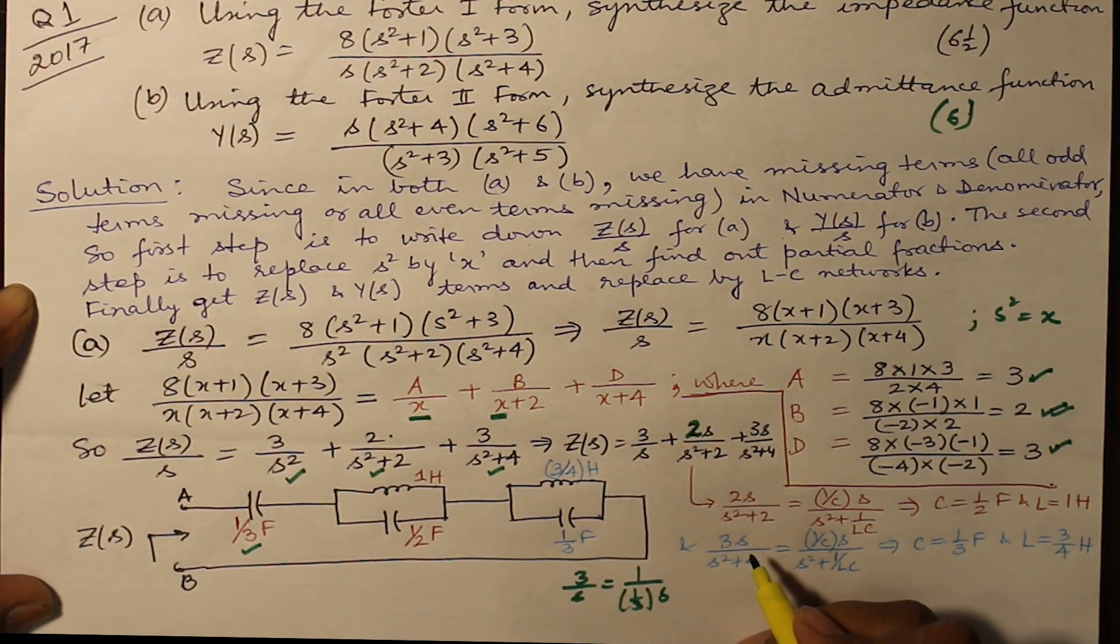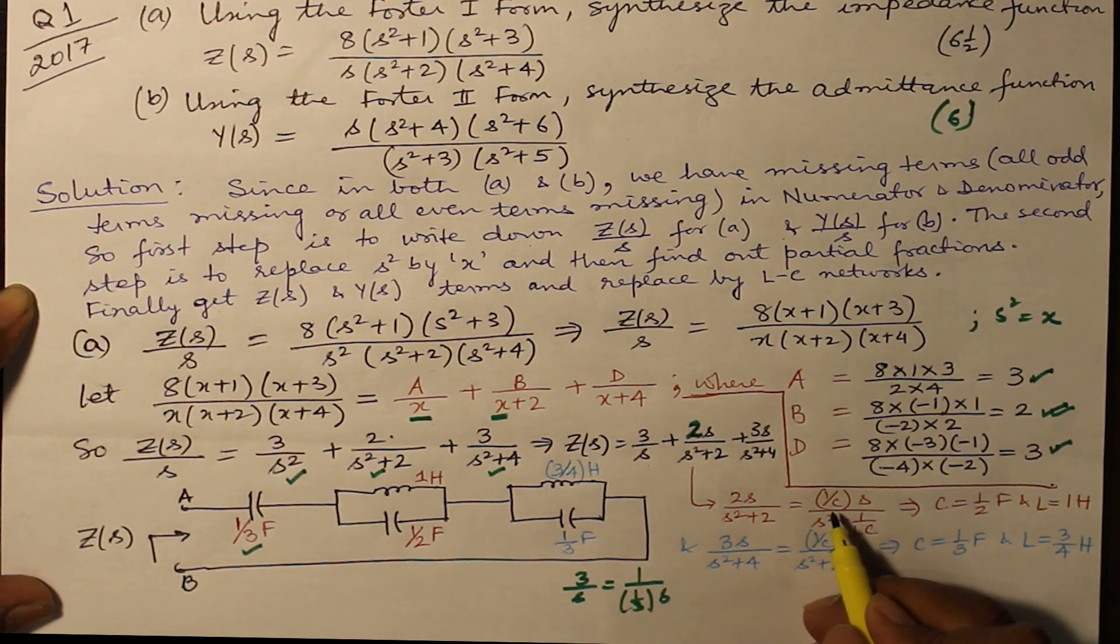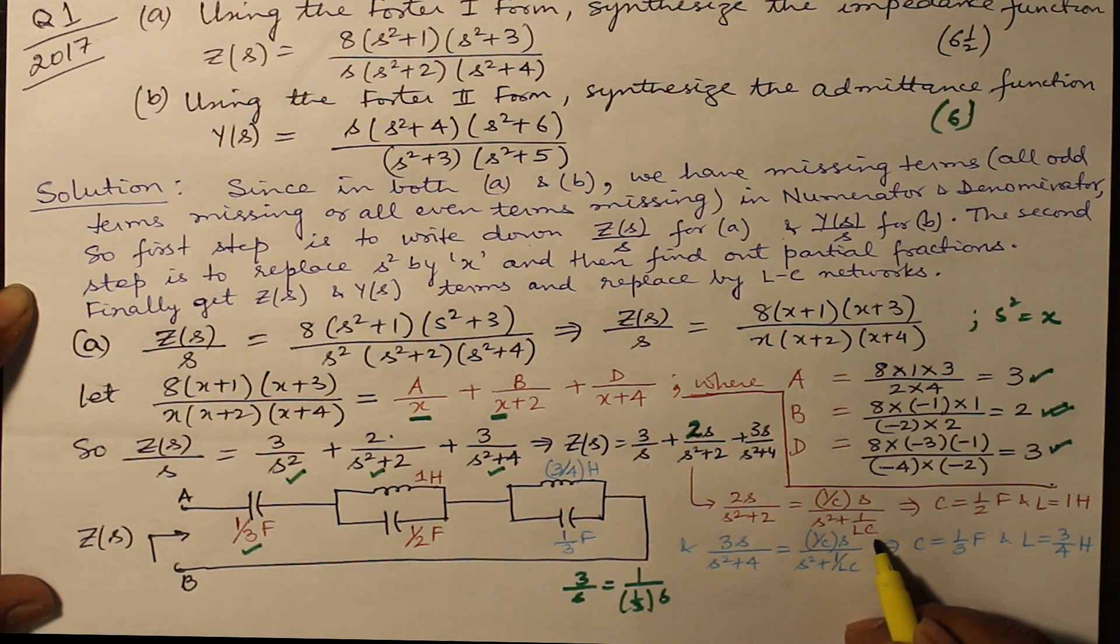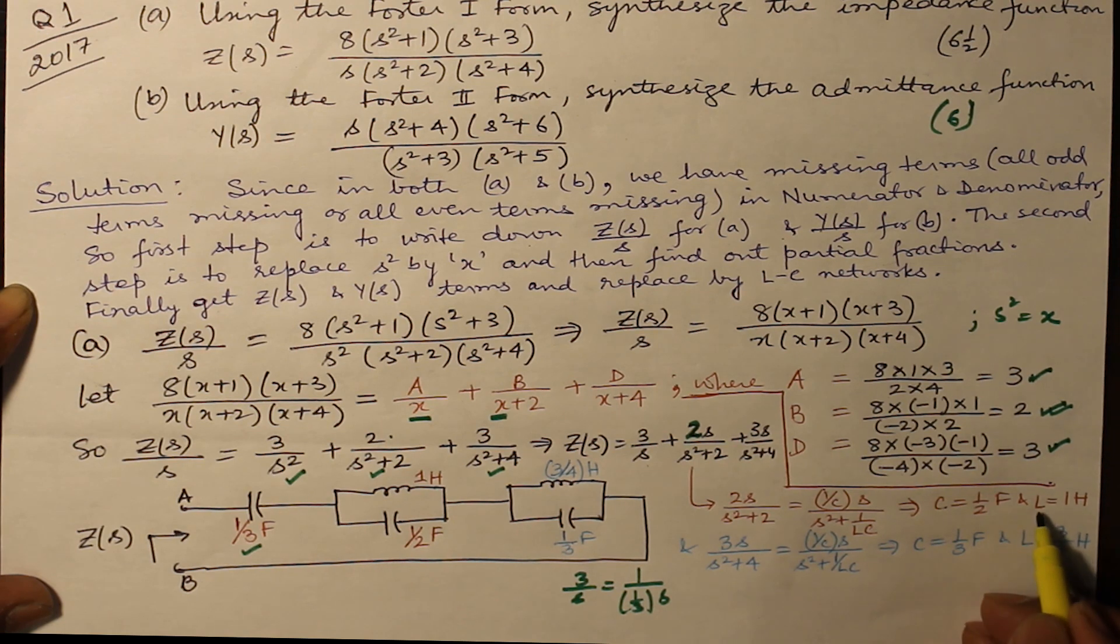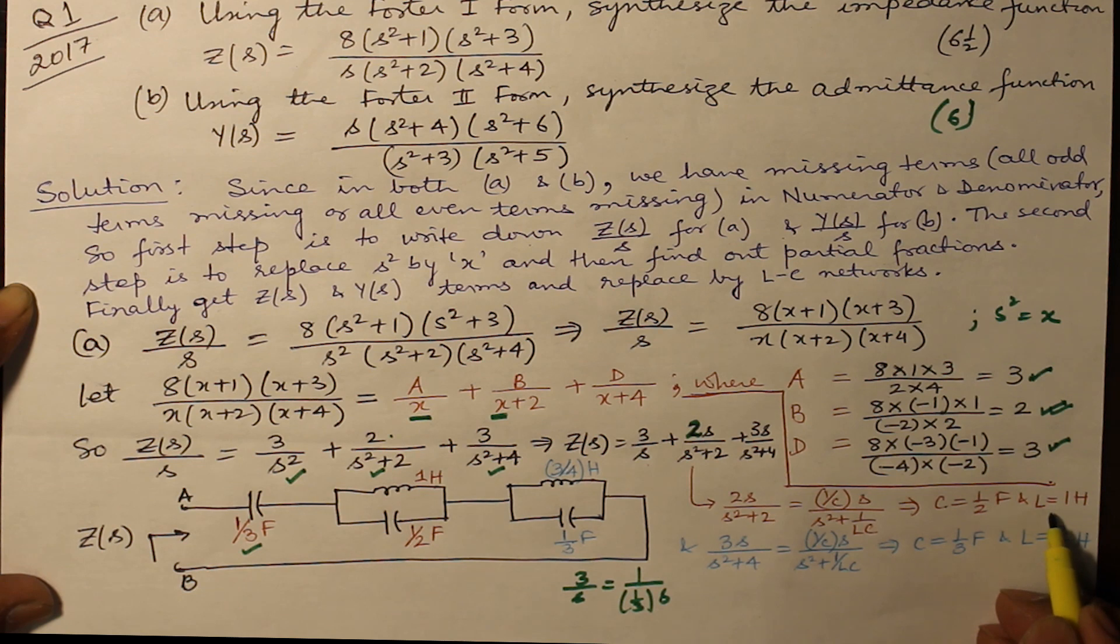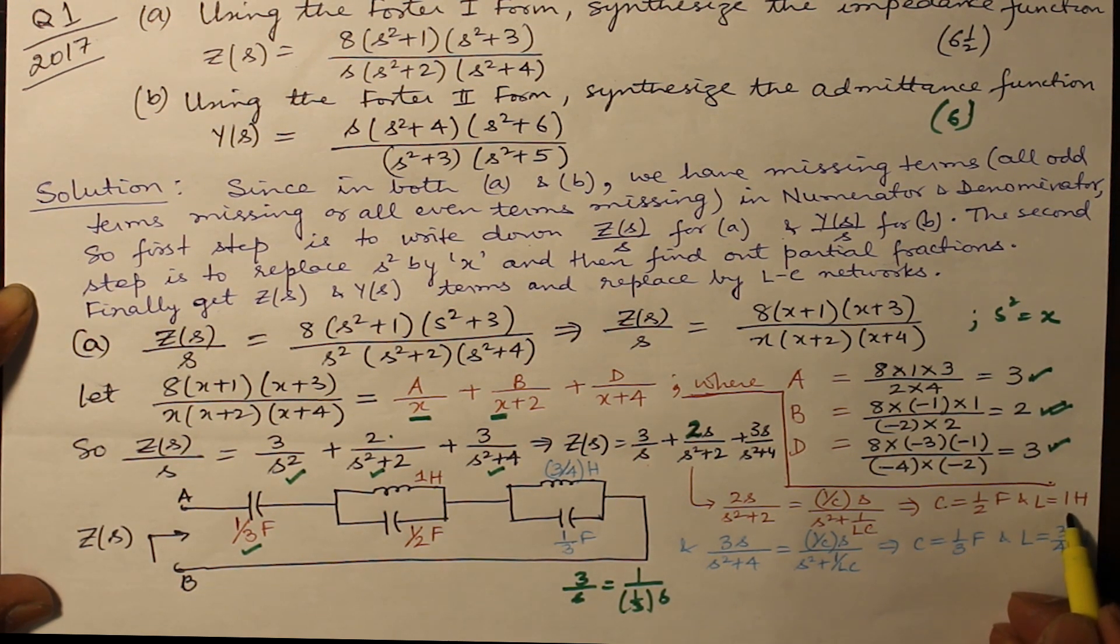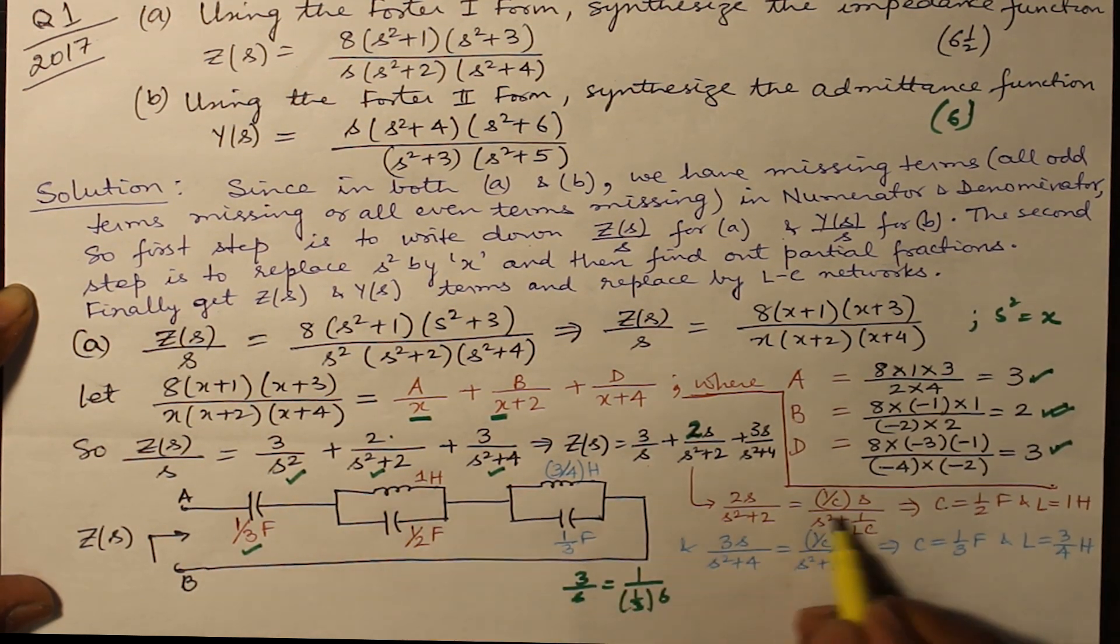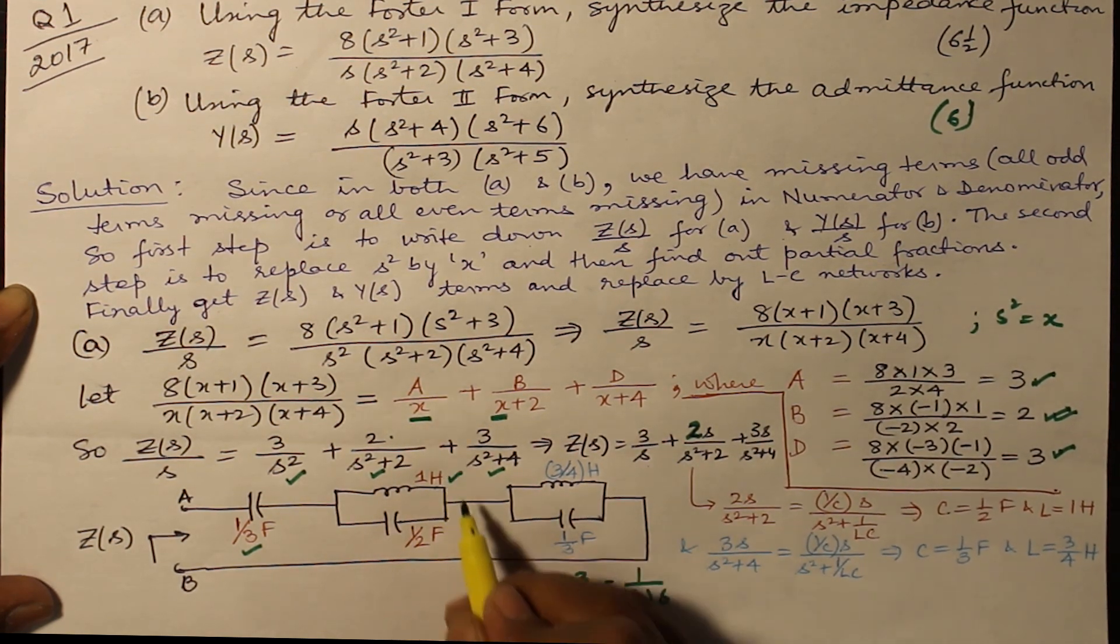Now 2s/(s²+2). Look into the lookup table. 2s/(s²+2) was equal to 1/(Cs), s² + 1/(LC) in the denominator. Which gives you 1/C as 2, so C becomes 1/2 farad. And L can be found out by equating 1/(LC) by 2. L will come out to be 1 henry. Put these values of 1/2 farad and L 1 henry here in parallel. So this red colored branch comes from this term, this and this.